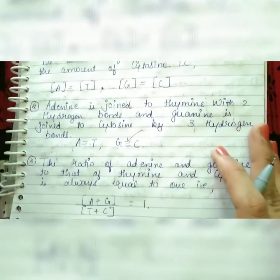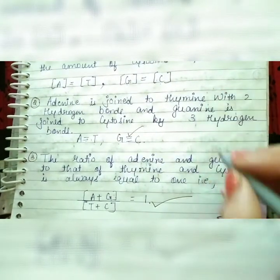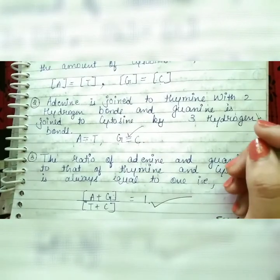The third Chargaff's rule states: the ratio of adenine and guanine to that of thymine and cytosine is always equal to one — that is, (A + G) / (T + C) = 1. These were the three rules of Chargaff.